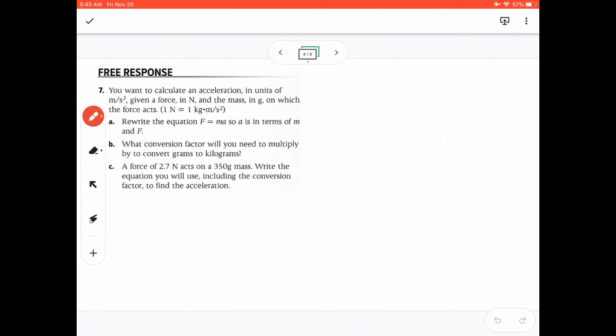Question 7. You want to calculate an acceleration in units of meter per second squared, given a force in Newton and the mass in gram on which the force acts. And it is given here that 1 Newton is equal to 1 kilogram meter per second squared. Question 8. Rewrite the equation F is equal to MA. So A is in terms of M and F. In this question, we just want to find A.